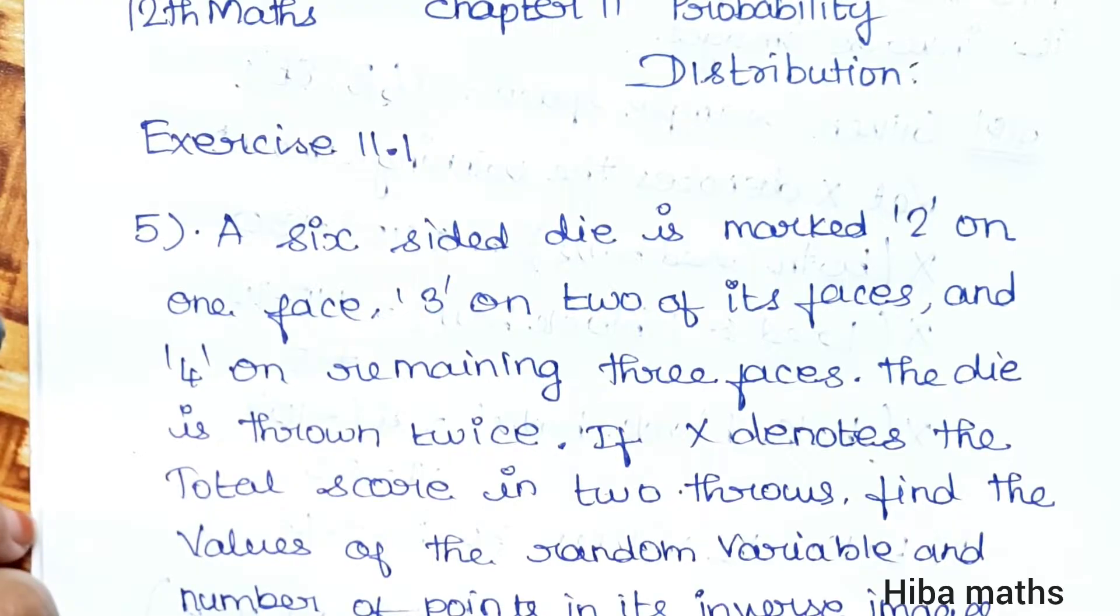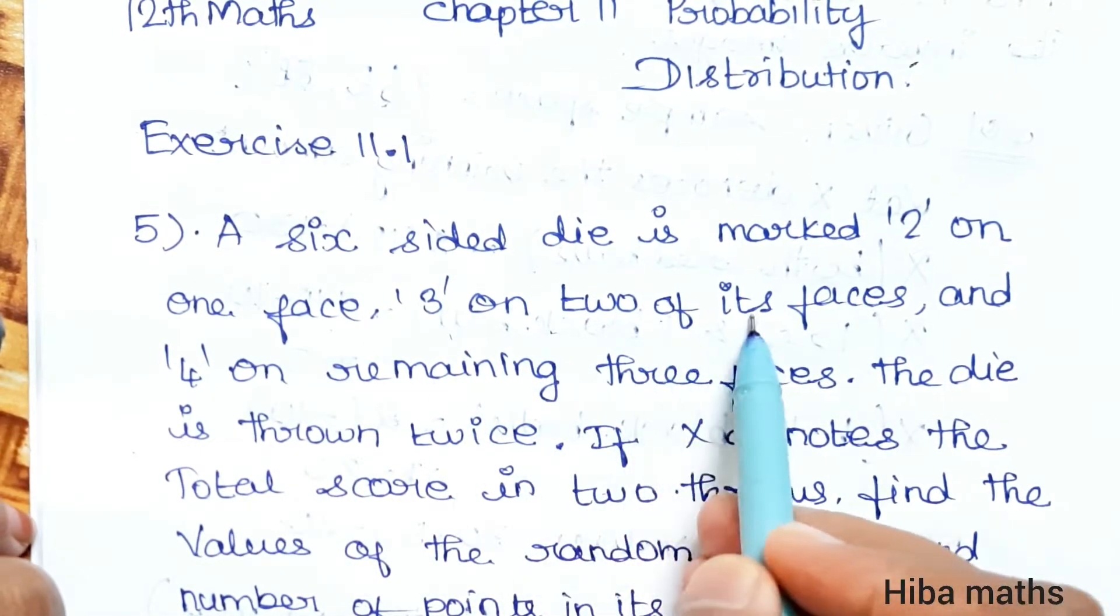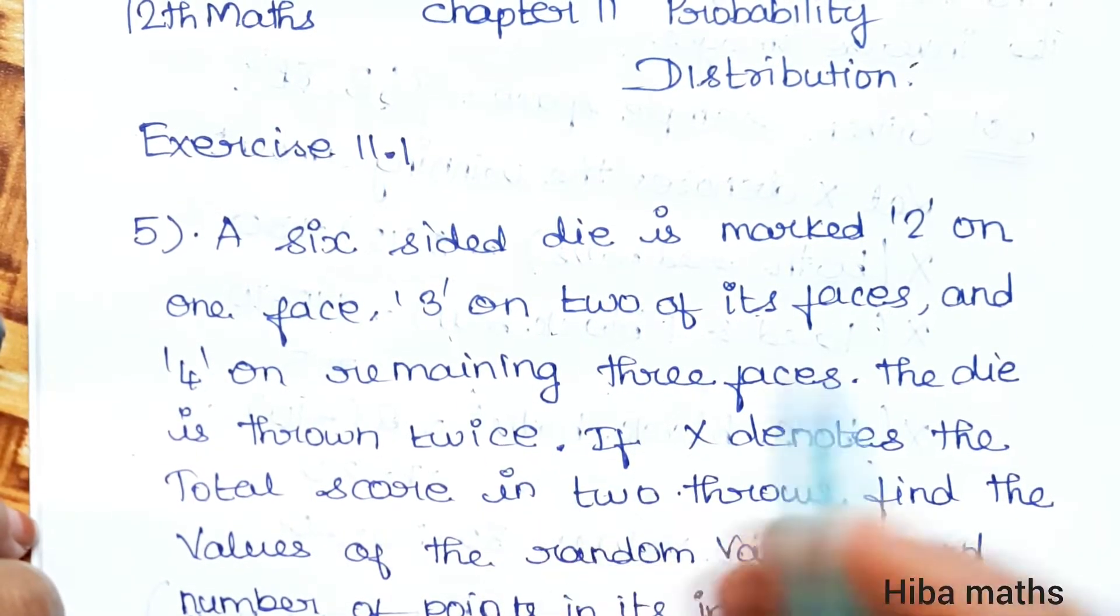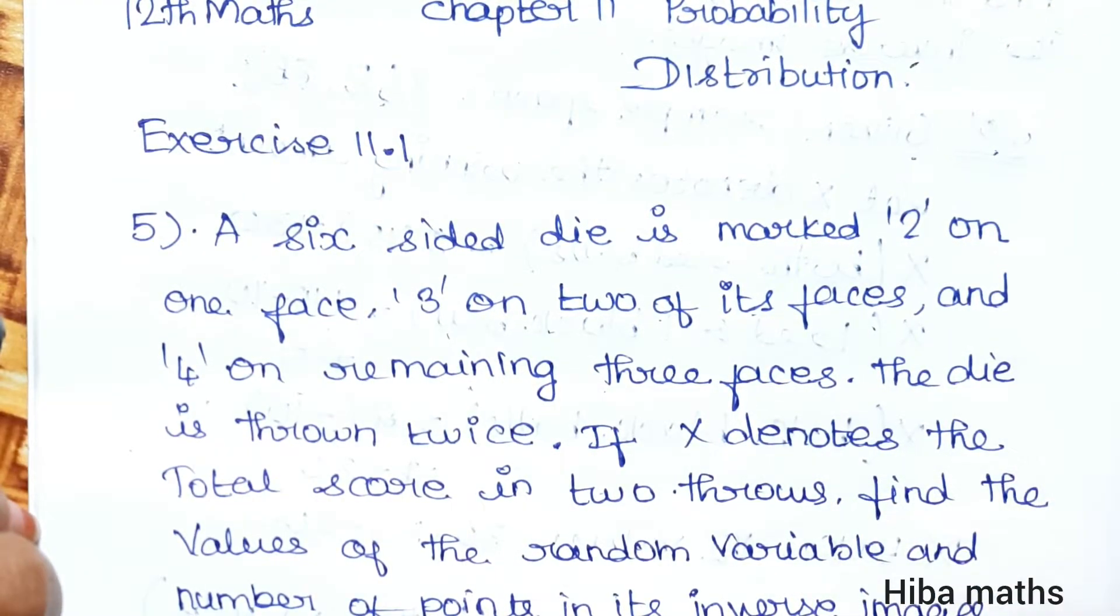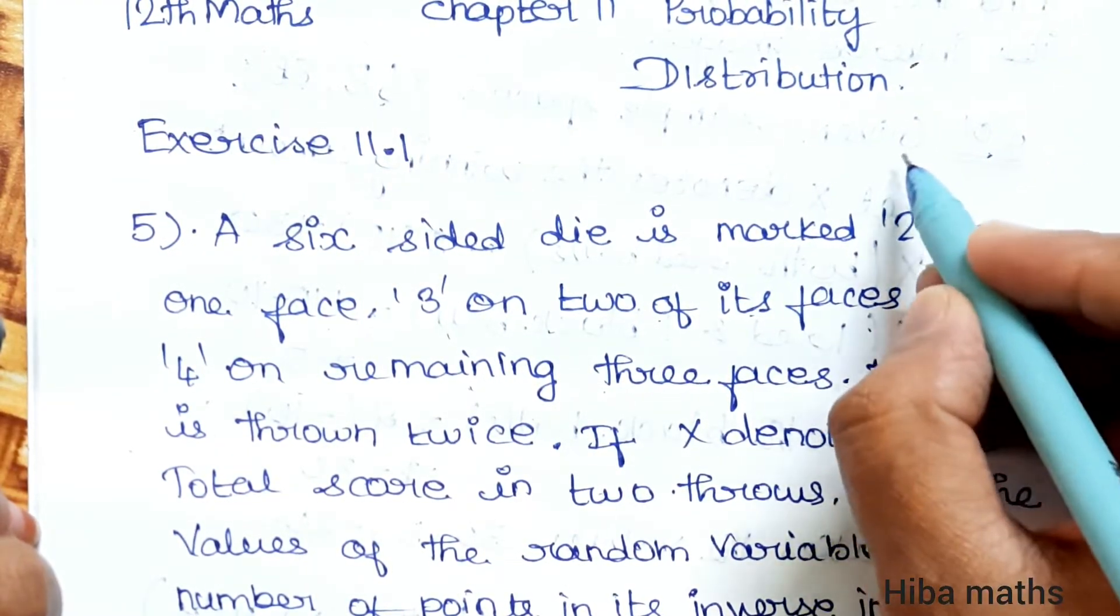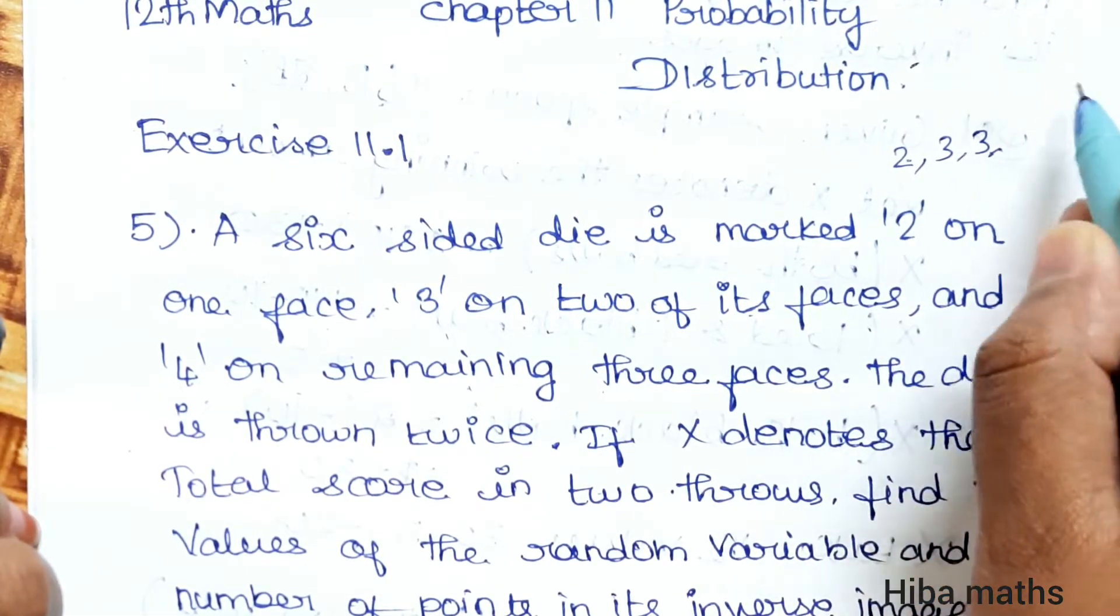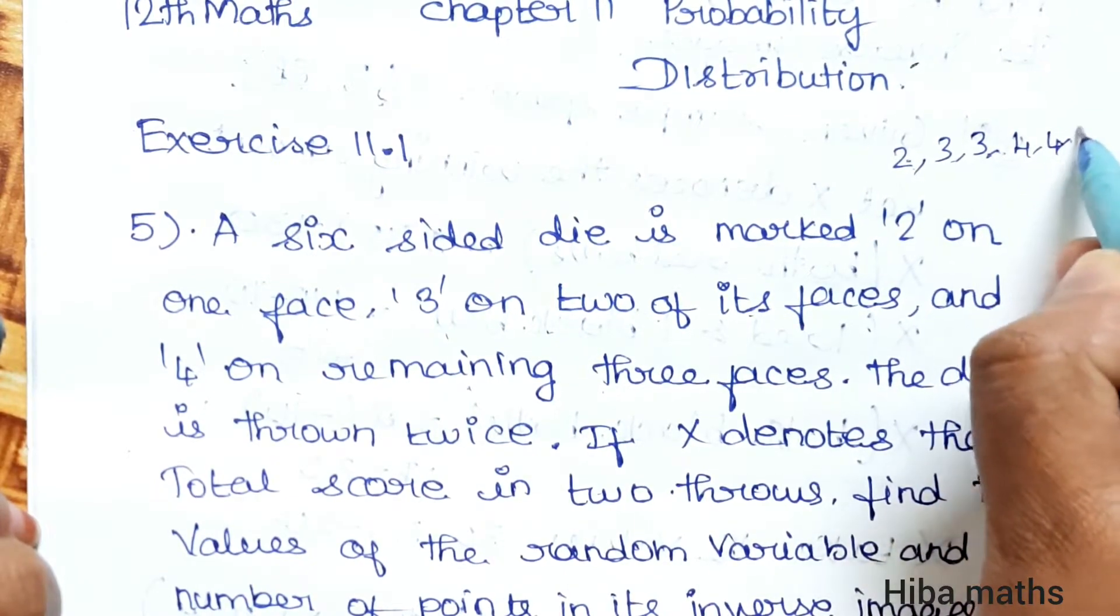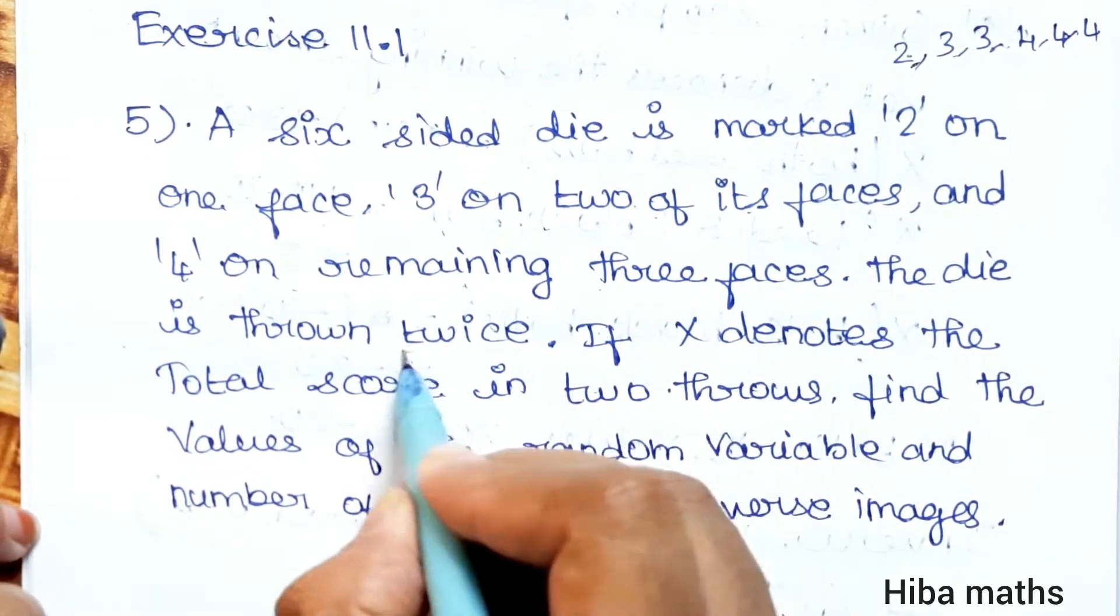A six-sided die is marked 2 on one face, 3 on two of its faces, and 4 on remaining three faces. The die is thrown twice.